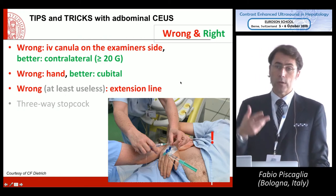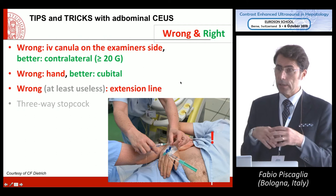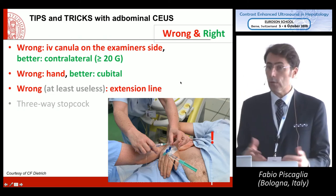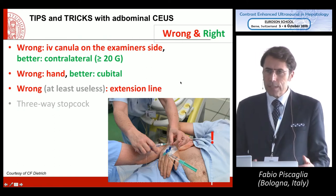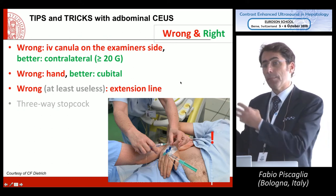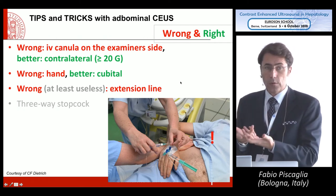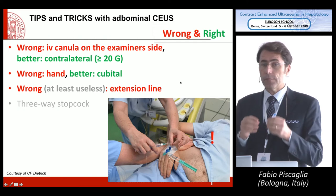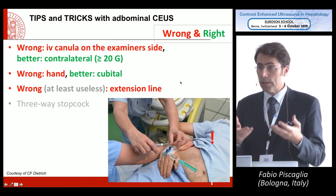It is better to use the cubital vein rather than peripheral veins because when you inject the bolus, you might rupture the venous walls due to too high pressure. The contrast agent itself is not deleterious — there is no hazard to the skin or subcutaneous tissue — but you lose the possibility of using that bolus. You should be aware that a bolus from a peripheral vein will not arrive at the same speed, which matters especially if you are looking for very rapid changes in the arterial phase.